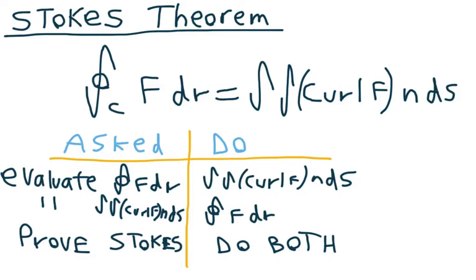Here's a general rule of thumb. If you're asked to find the closed integral of f·dr, or generally they'll say evaluate the closed integral of f·dr, do the double integral of the curl of f times n times ds. If you're asked to evaluate the double integral of curl of f times n times ds, well then simply do the closed integral of f·dr.